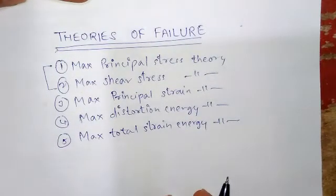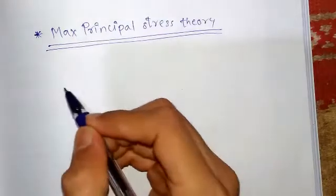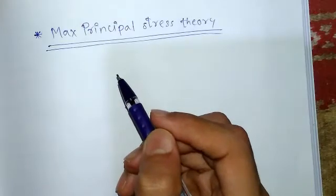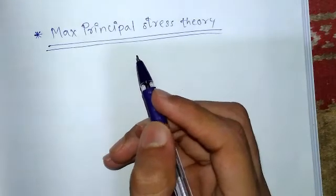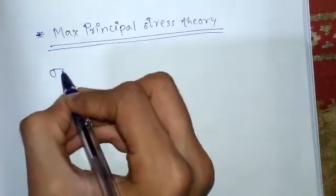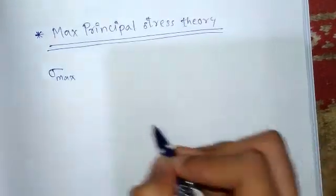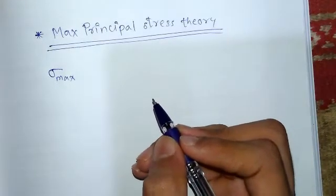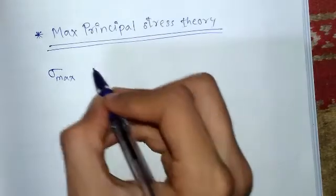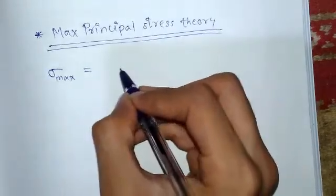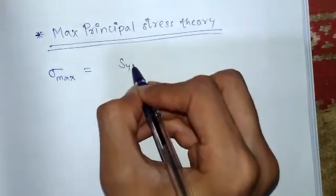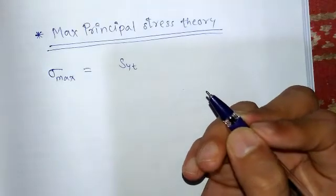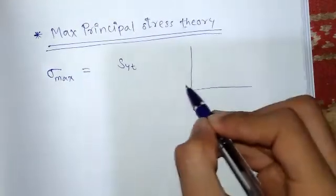Let us start with maximum principal stress theory. According to maximum principal stress theory, failure of a component takes place if the maximum principal stress at any point exceeds the value of stress at the elastic limit in simple tension — which is nothing but yield strength. Don't get confused between yield strength and tensile strength.